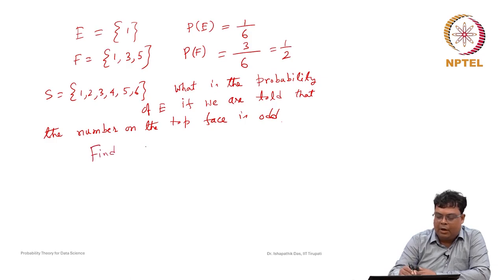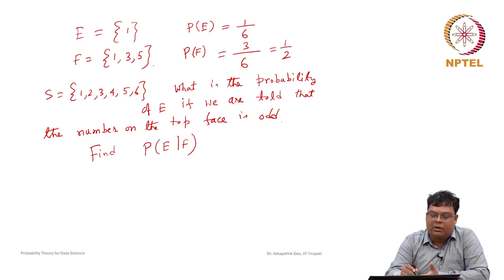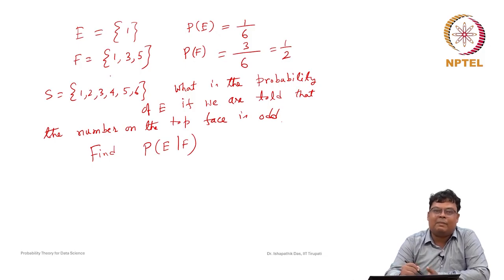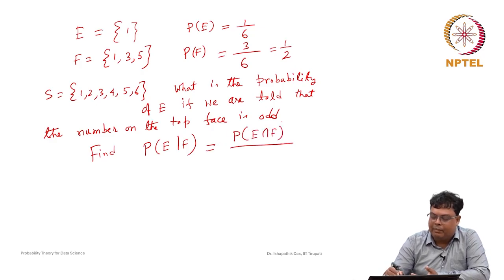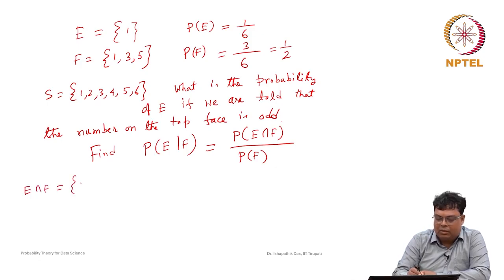We need to find P(E|F). From intuition, since we know the number is odd, the new sample space is {1, 3, 5}, and out of these 3, only 1 satisfies E. So intuitively the probability should be 1/3. Applying the definition: P(E|F) = P(E∩F) / P(F). P(F) = 1/2. E∩F = {1} ∩ {1,3,5} = {1}.